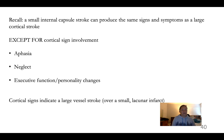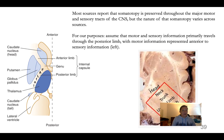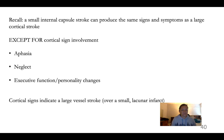A small internal capsule stroke can produce the same signs and symptoms as a relatively large cortical stroke, with much less ischemic territory needed. There are no cortical signs if the stroke is restricted to the internal capsule. A stroke involving the posterior limb will likely include sensory deficits as well as motor deficits. Make sure you can distinguish aphasia — a cortical sign — from dysarthria, which is a pure motor sign.